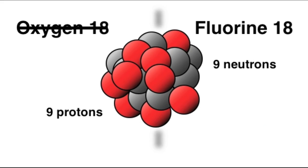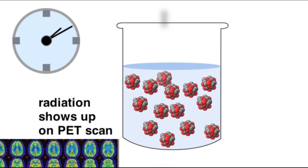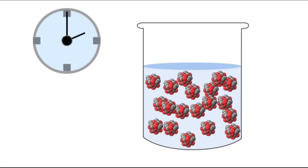The cyclotron beam does just that. After a few hours, you can make a sizable amount of fluorine-18, enough to do PET scans on a few dozen people.